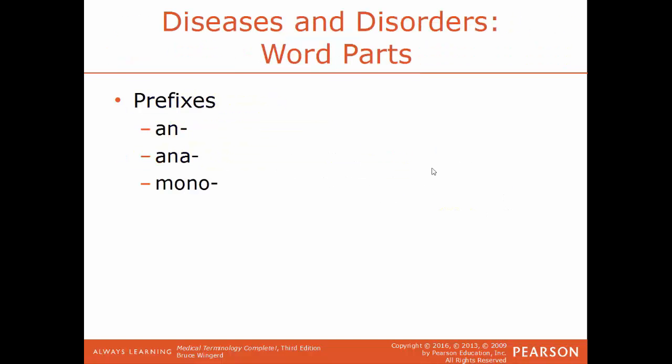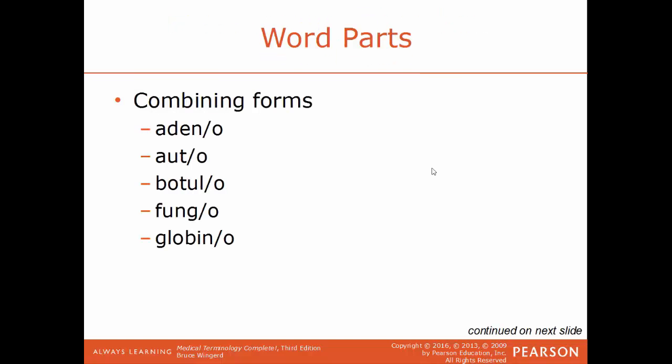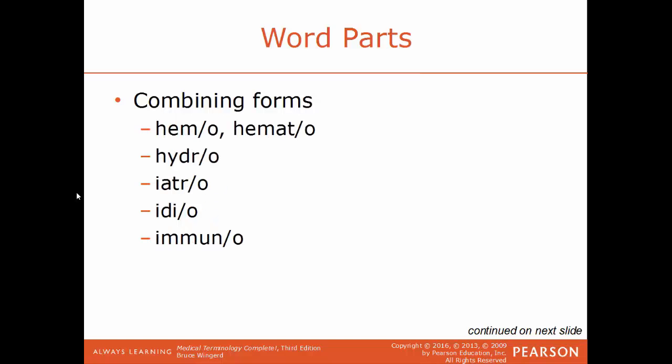Now we'll discuss diseases and disorders with word parts. Prefixes: an- means without or lacking; ana- means up, apart, backward, or again; mono- means one. Combining forms: adeno refers to a gland; auto means own or self; botulo refers to the bacterium botulinum — botulism is an example of food poisoning. Fungo refers to fungus. Globin refers to a protein. Hemo or hemato refers to blood. Hydro refers to water. Iatro refers to physician or treatment. Idio refers to unknown — an idiopathic disease has an unknown cause. Immuno refers to the immune system.